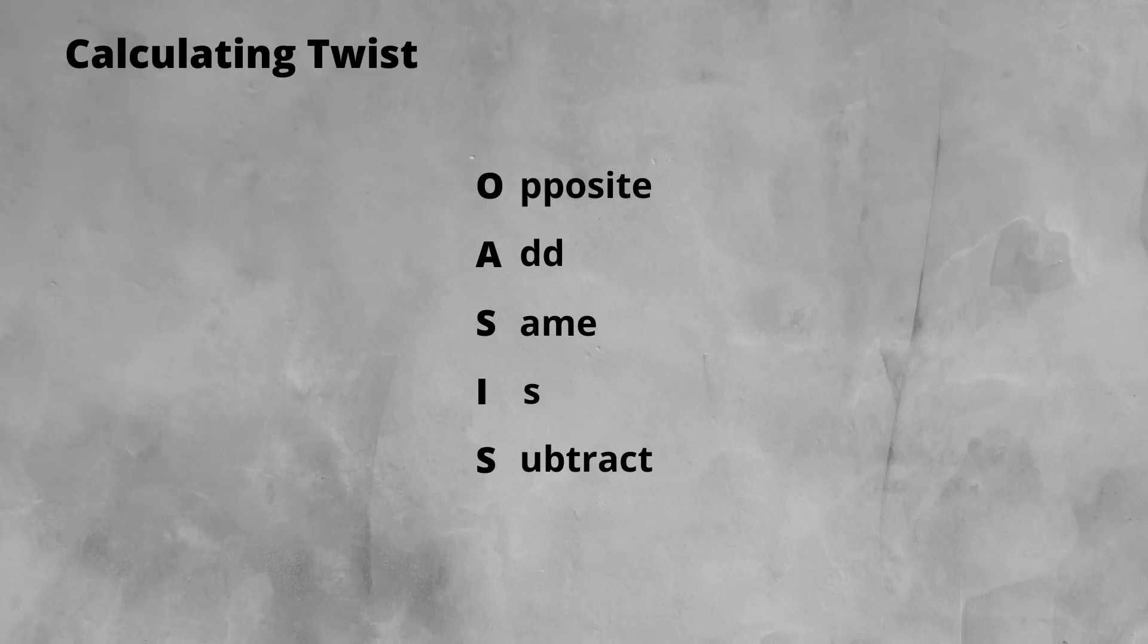So how do we include dynamic twist? Dynamic twist values will be in terms of the amount of voiding under a sleeper. We treat it using OASIS, but we adjust the cross-level readings before we work out the difference.